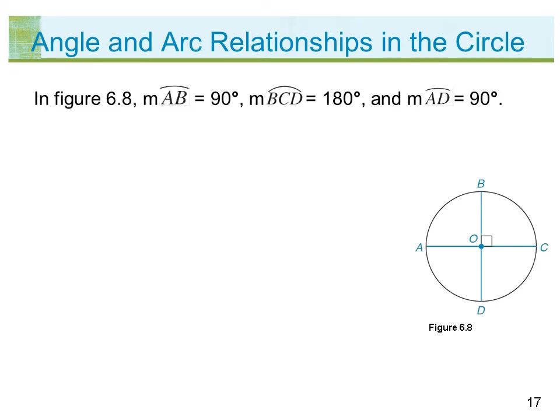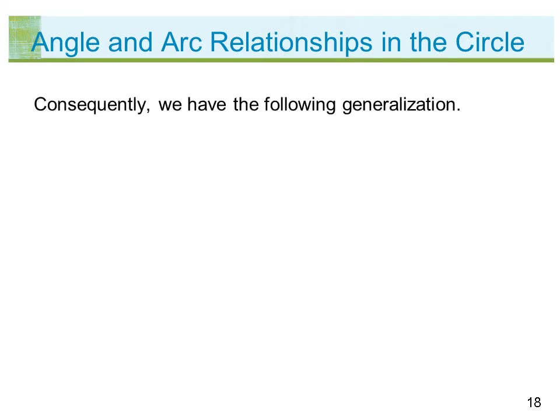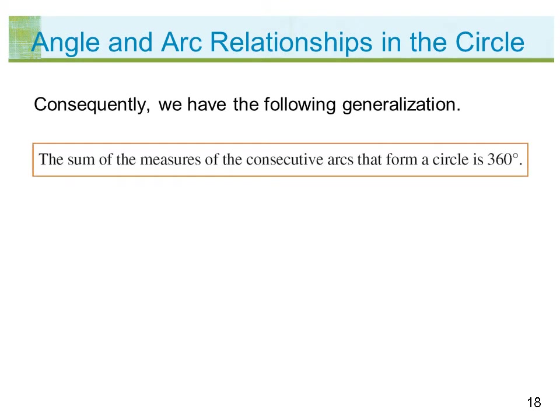In figure 6.8, the measure of arc AB equals 90 degrees, the measure of arc BCD equals 180 degrees, and the measure of arc AD equals 90 degrees. It follows that the measure of arc AB plus the measure of arc BCD plus the measure of arc AD equals 360 degrees. Consequently, the sum of the measures of the consecutive arcs that form a circle is 360 degrees.